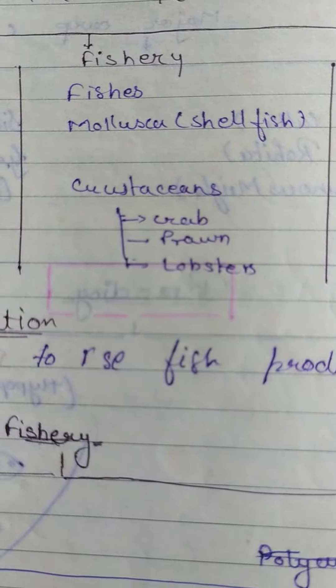Aquaculture refers to aquatic animals and plants. The effort to rise fish production is called the Blue Revolution.